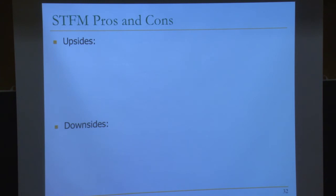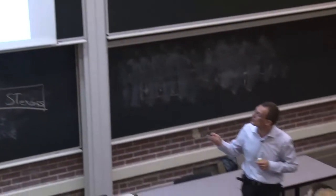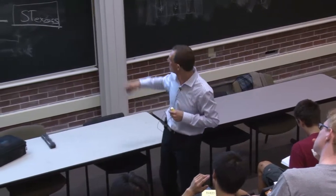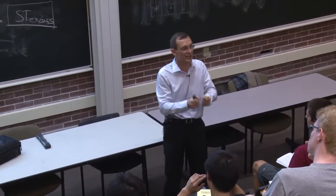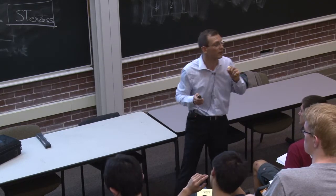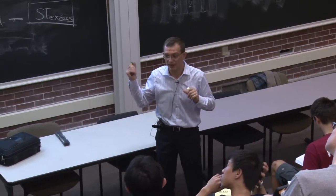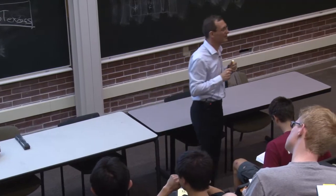STFM is the first algorithm for fair multi-core memory scheduling. It provides a mechanism to estimate memory slowdown of a thread, and it's good at providing fairness. Fairness can improve performance through better core utilization — though not always, since being fair can lose memory bandwidth sometimes. The downside: determining the alpha threshold to maximize performance is not easy, as it depends on different applications and workloads.